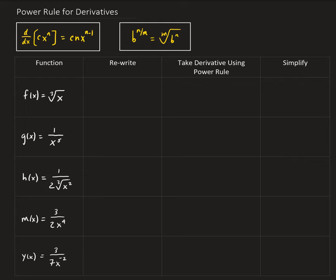The power rule for derivatives is: if we have, for example, cx to the n, and we take the derivative of that, that's going to be equal to c — where c is a constant — times n. So we bring down the n, and then we have times x to the n minus 1.